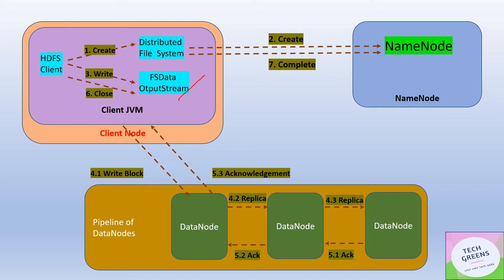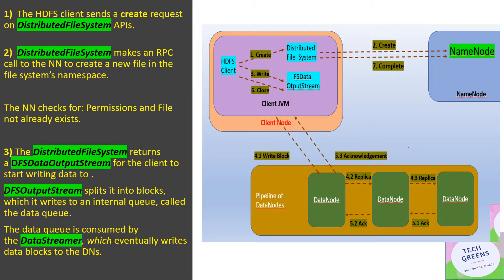It then waits for acknowledgements back from the DataNodes once the write is finished. Once all acknowledgements are received, the signal is sent to the NameNode that the write operation is successfully completed. Now let's see each of these seven steps in detail. The first thing that happens is the HDFS client sends a request to create a distributed file system — it is an I/O file system API provided by Hadoop, specifically the distributed file system APIs.